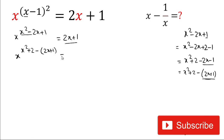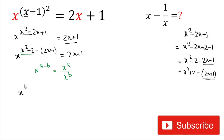Now we write x to the power of [x²+2 minus (2x+1)] equals 2x+1. We split this using the rule x^(a-b) = x^a / x^b, so we write: x to the power (x²+2) divided by x to the power (2x+1) equals 2x+1.